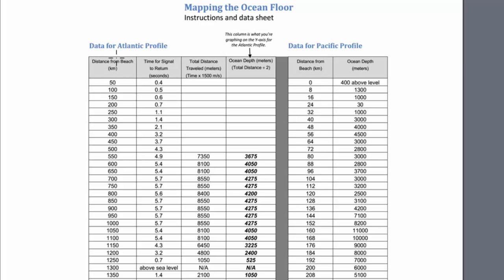We have distance from beach in kilometers, time to return in seconds, and distance traveled in meters. We're going to take the time and multiply it by the speed of sound in water — 1,500 meters per second. We're rounding from 1,507 this time. Then we're going to take half that distance.